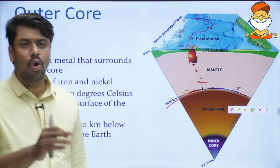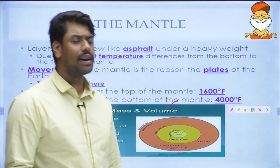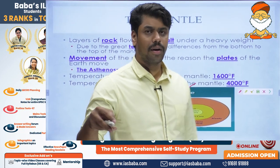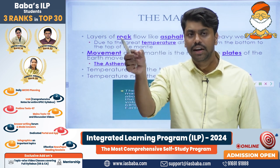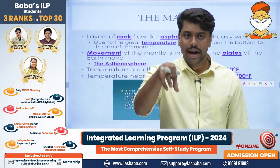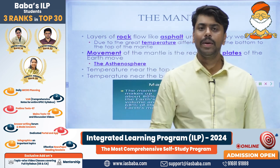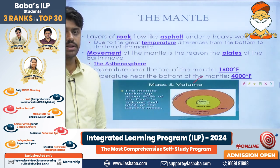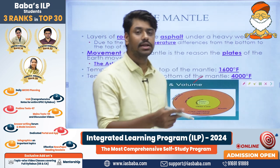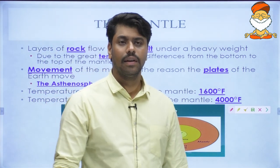Next we come to the mantle. Imagine a slice of bread: the small brown portion on the corner is the crust, the big white portion inside is the mantle, and if you break an egg and put the yolk in the center, that yolk-sized space is the core. The mantle encompasses almost 80% of the Earth's volume and 68% of the Earth's mass.